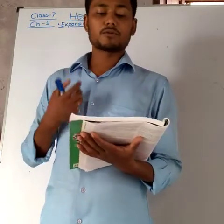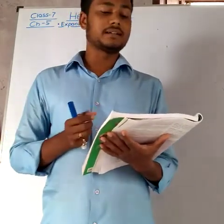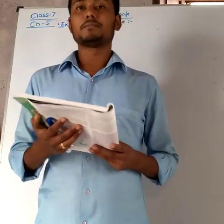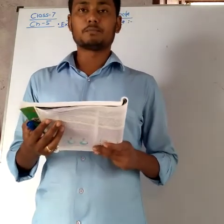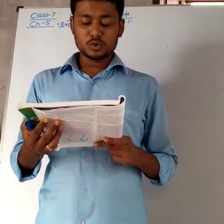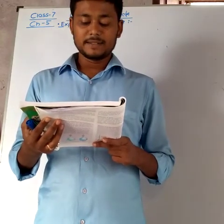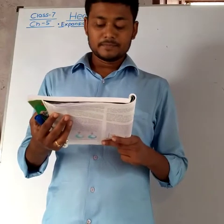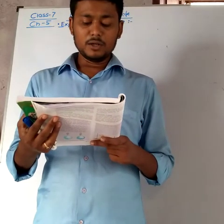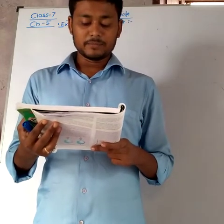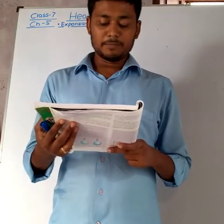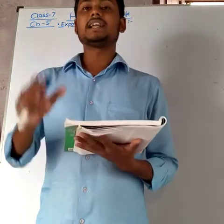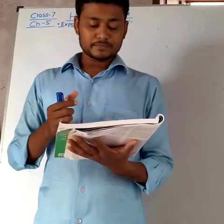Expansion of solids or any state of matter can sometimes be put to use, but sometimes it causes problems. In summer, electric cables between two poles expand, and in winter they contract and become taut. If cables are laid in summer, they must be left a little loose to allow for contraction during winter. If this is not done, they may break on contraction in winter.